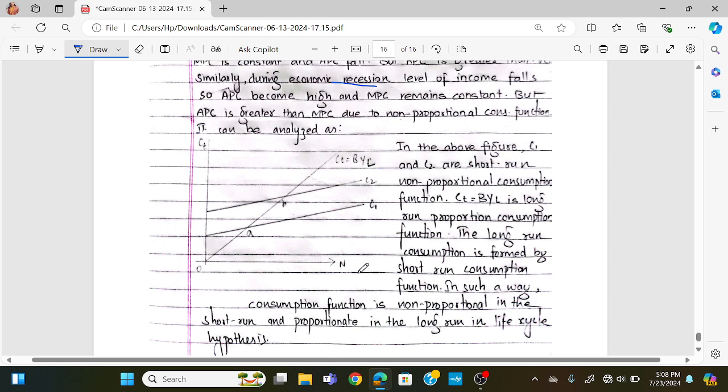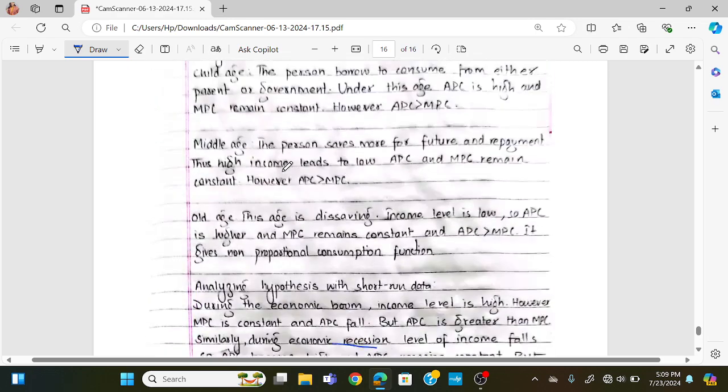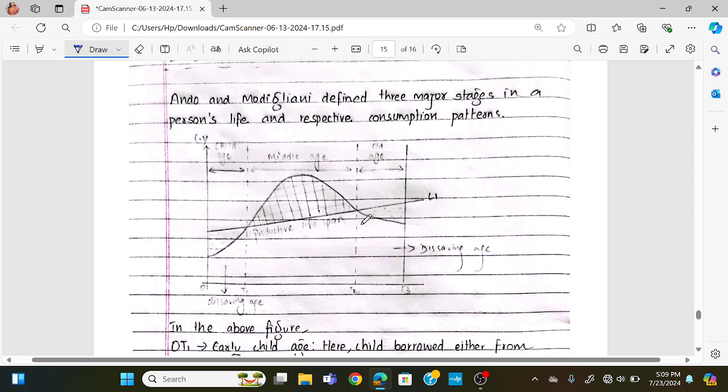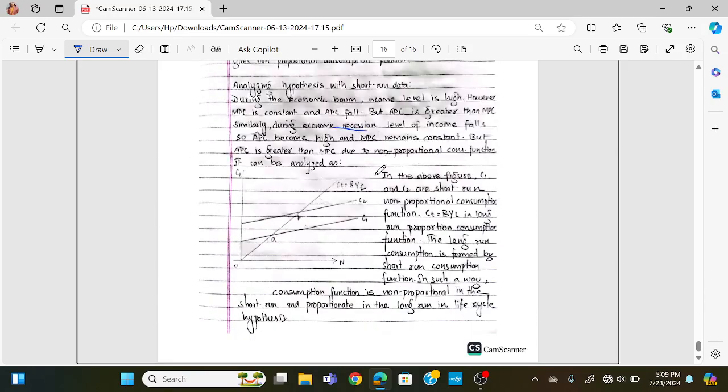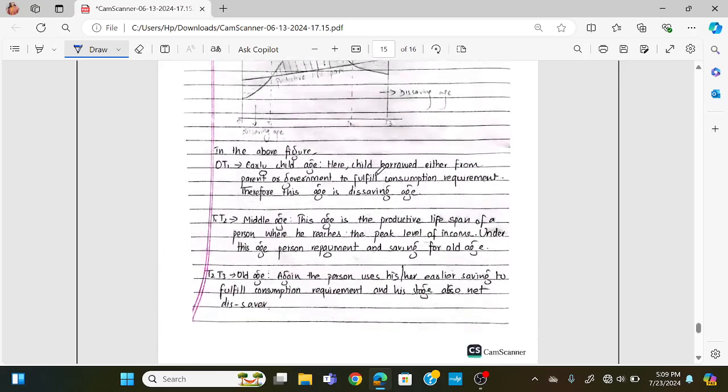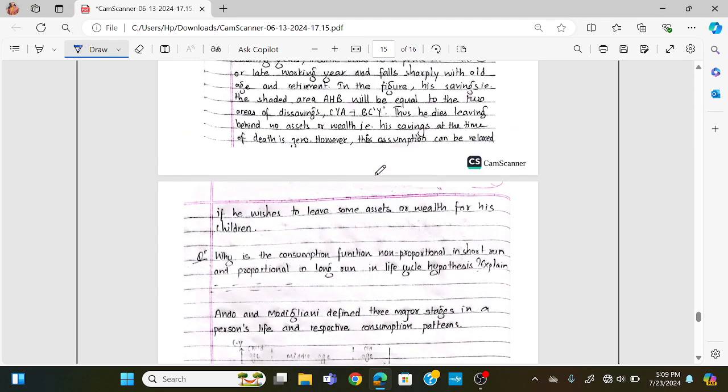In the figure, on the y-axis we have consumption and on the x-axis we have income level. The curve C1C2 represents the short-run non-proportional consumption function, while the long-run curve is proportional. The figure shows areas of dissaving and saving across different income levels. This concept is important for 5 or 10 mark questions on cross-sectional analysis and the life cycle theory.